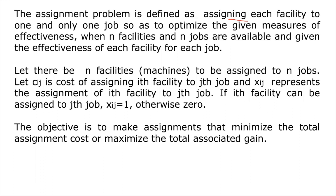When N facilities and N jobs are available, all data — such as cost of assignment, number of jobs, number of workers, and number of facilities — will be provided. C_ij represents the cost of assigning the i-th facility to the j-th job. X_ij represents the assignment of the i-th facility to the j-th job: if an assignment has been made, X_ij equals one; if there is no assignment, X_ij equals zero.